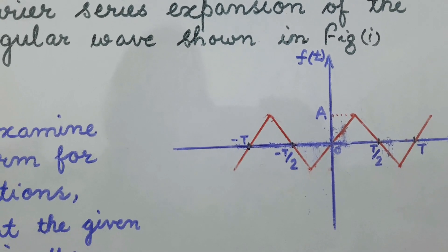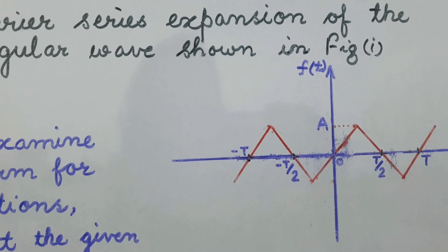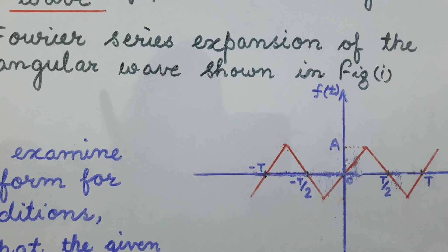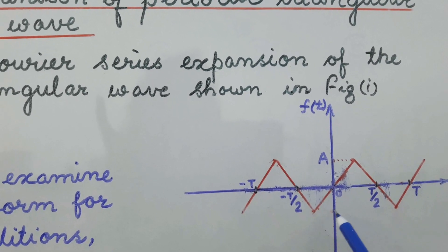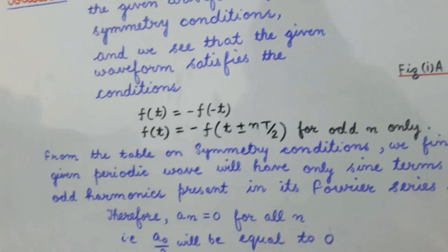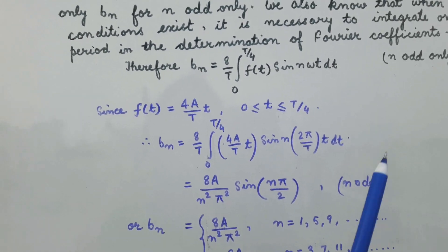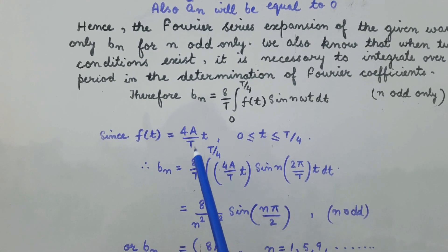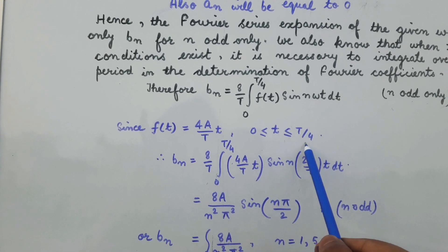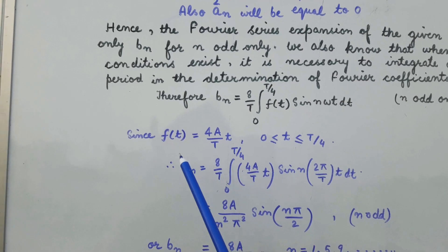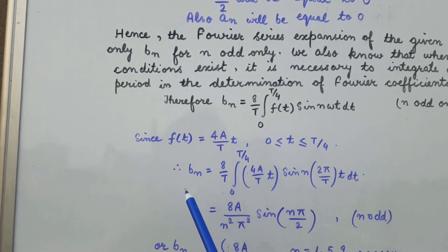For the given periodic triangular wave, we will find out the value of f(t) for one quarter cycle. For one quarter cycle, the value of f(t) will be equal to a divided by T/4, which equals 4a/T. So we write the equation of f(t) as (4a/T) × t, for 0 ≤ t ≤ T/4.